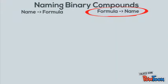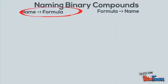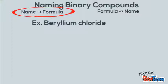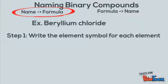Now that we've gone from a formula to a name, let's move on to being given the name and asking for the formula. In this example, we're going to use beryllium chloride.